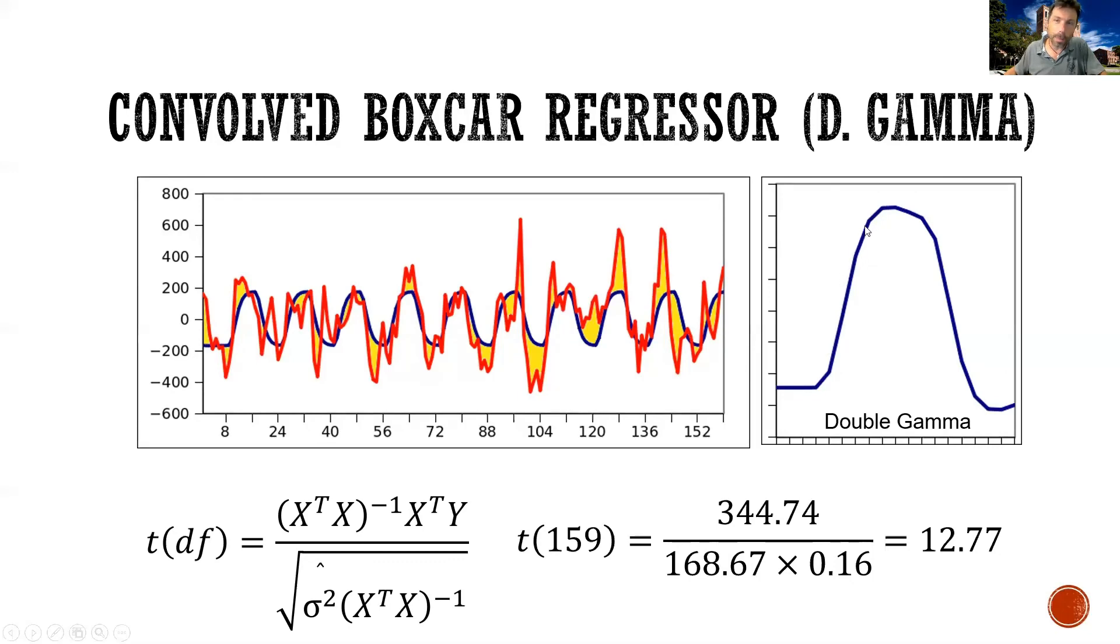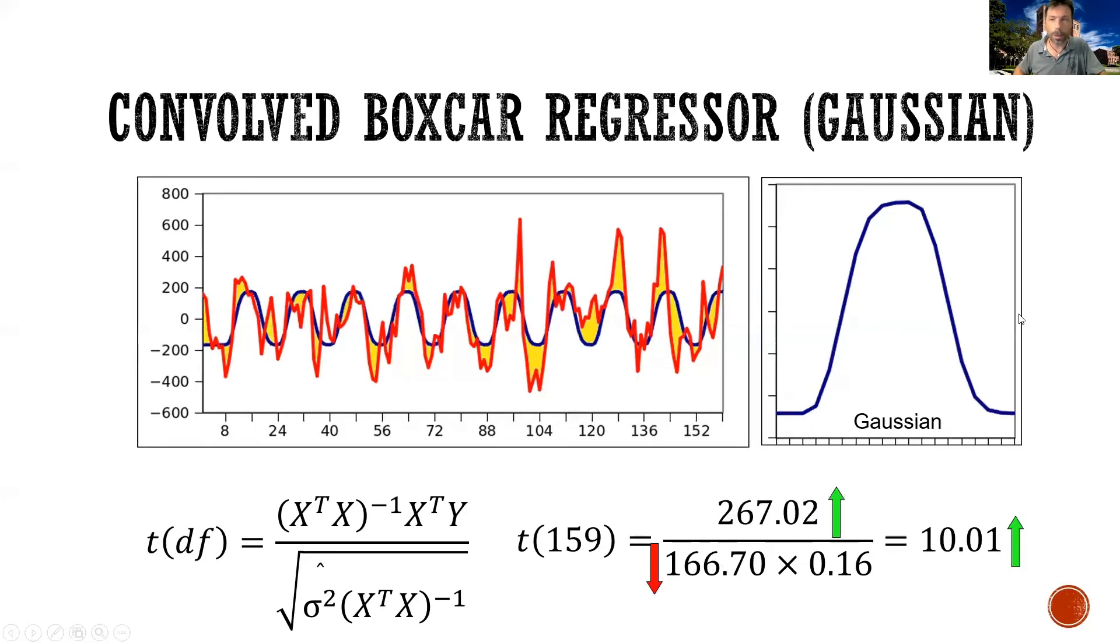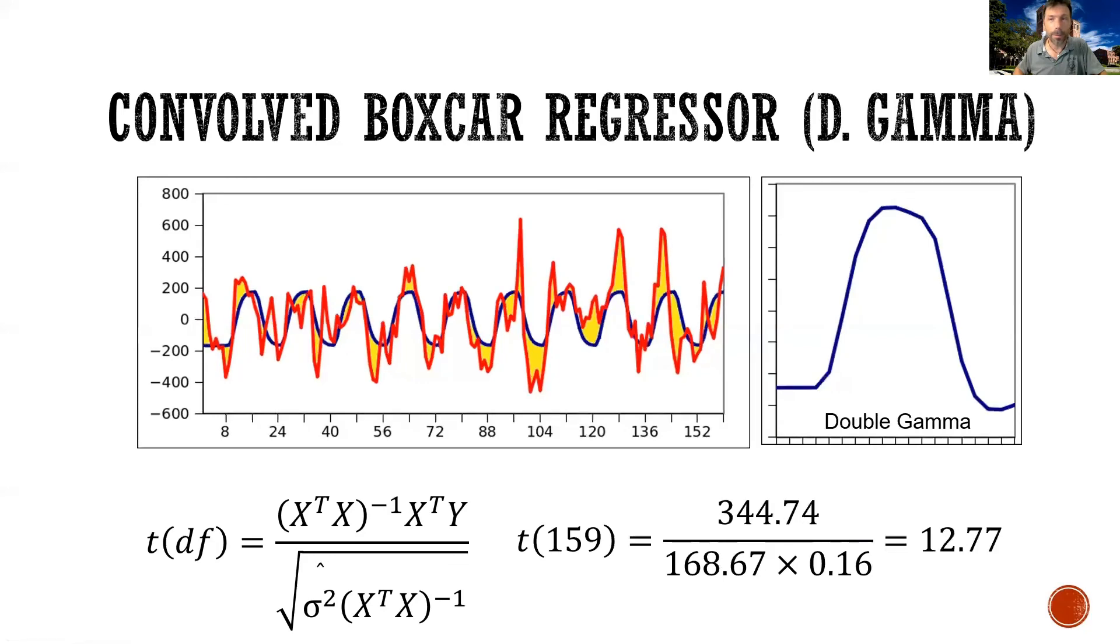And then, at the end of the descent, there's this undershoot, typically under here, which you do not see in the gamma, in the single gamma function.